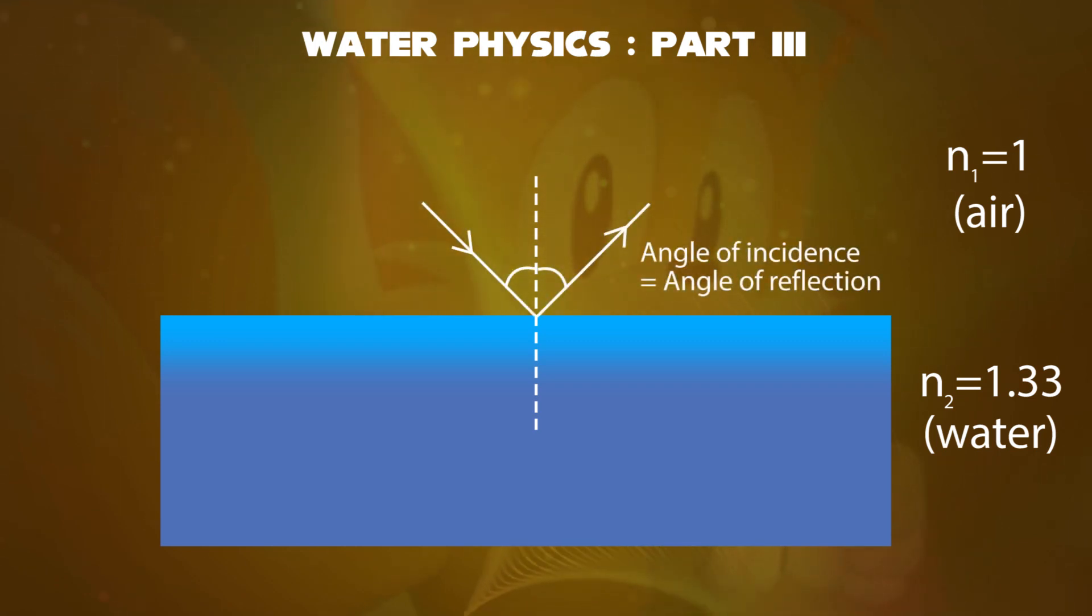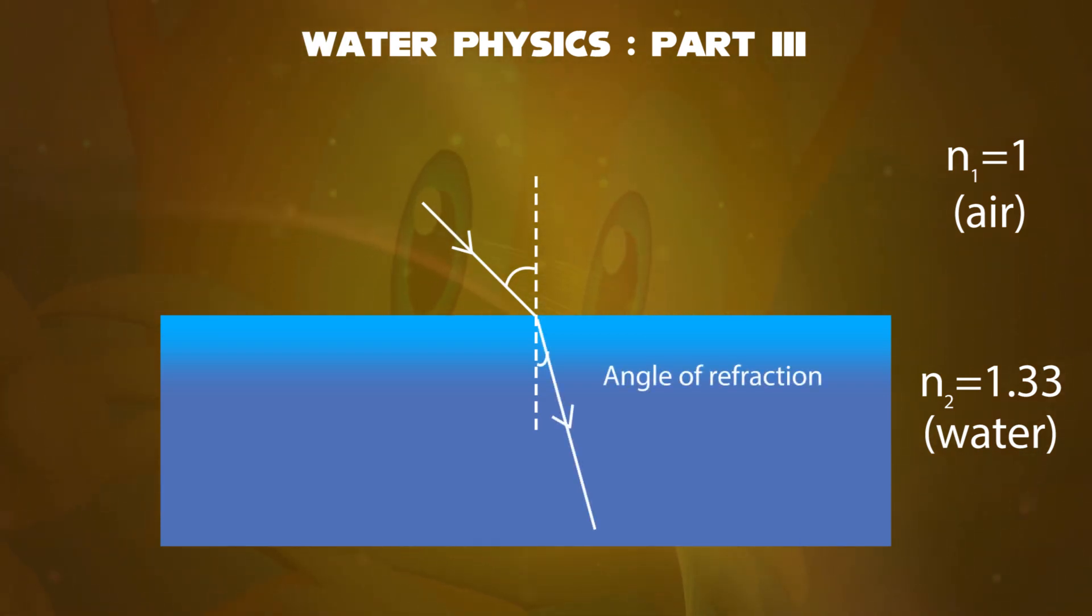On the surface, the angle of incidence is equal to angle of reflection. For refraction, the angle deviates. Therefore, the angle of incidence is greater than the angle of refraction.